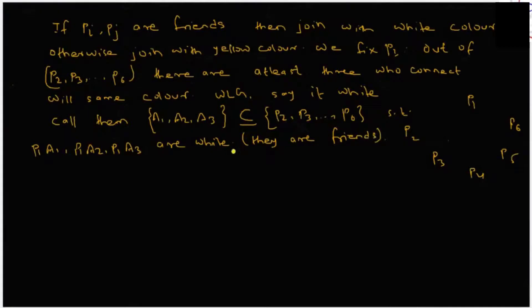Now let's draw this. This is P1, and take a1, a2, and a3. P1 a1 are friends, P1 a2 are friends, and P1 a3 are also friends. Then we do not know about a1 a2, a1 a3, and a2 a3.